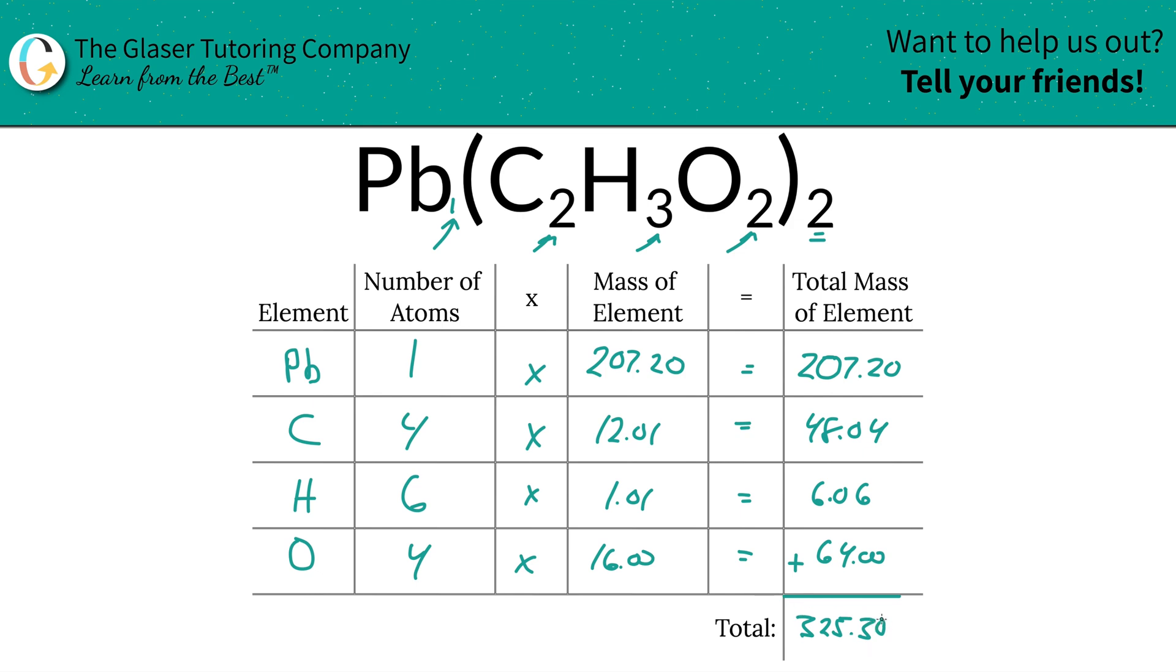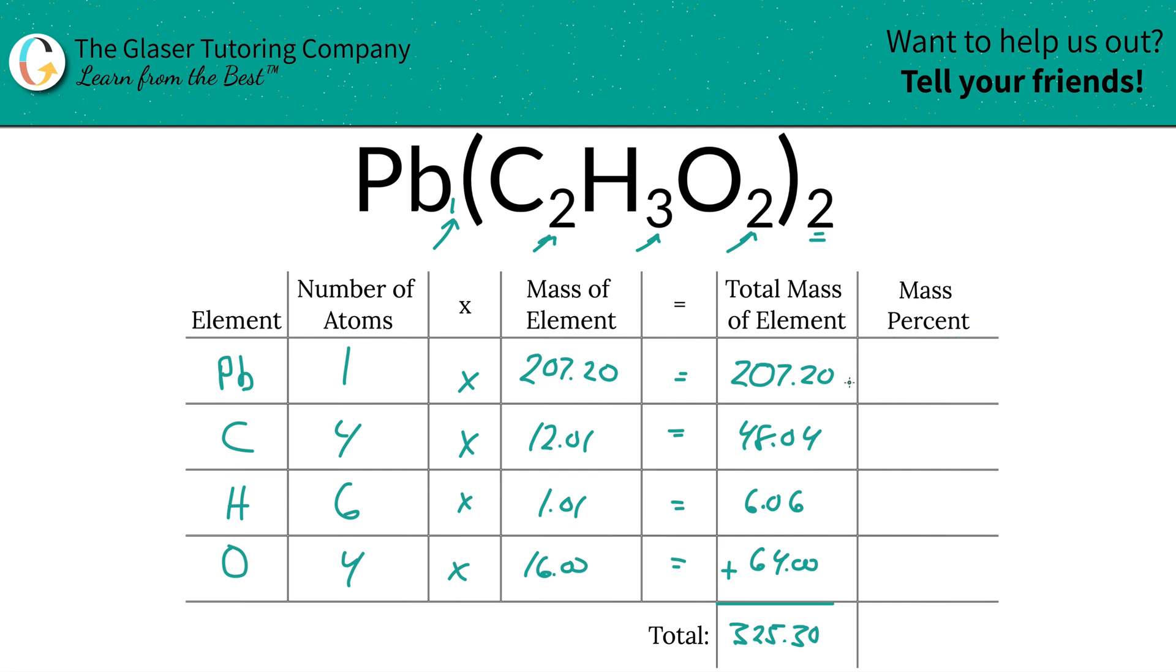Now that I know the total mass, I'm going to simply add a column to this table. Watch how quick and simple this will be. So to now find the mass percent of, let's say, lead, I'm going to take the total mass of the lead, 207.20, divide it by the total mass of the entire compound. So 325.30.